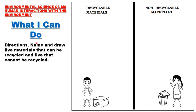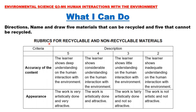What I Can Do: Name and draw five materials that can be recycled and five that cannot be recycled, drawing them in the provided boxes. The first column is for recyclable materials, and the second column is for non-recyclable materials. The rubrics for grading are accuracy of content and appearance. For accuracy, the learner shows deep understanding of human interaction with the environment. For appearance, the work must be artistically done and attractive. A perfect score for this activity is 10 out of 10.